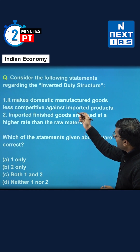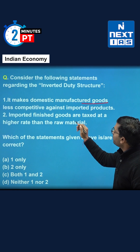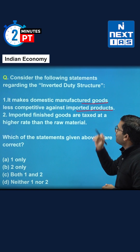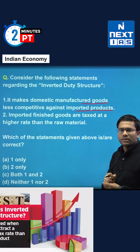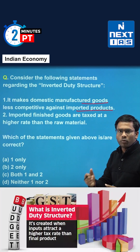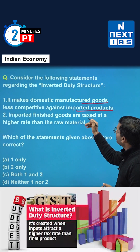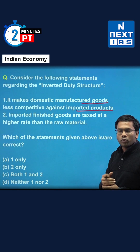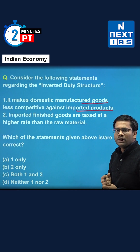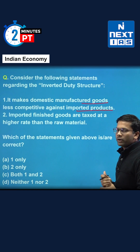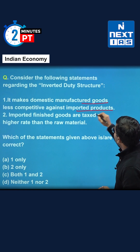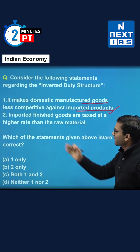In inverted duty structure, the taxation on raw material is more in comparison to the taxation on the finished imported product. So if taxation on raw material is more, then if we manufacture any product using that raw material, it will be less competitive because the cost of manufacturing that product will be high. So our first statement becomes correct.